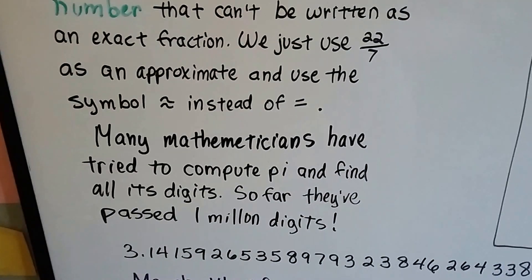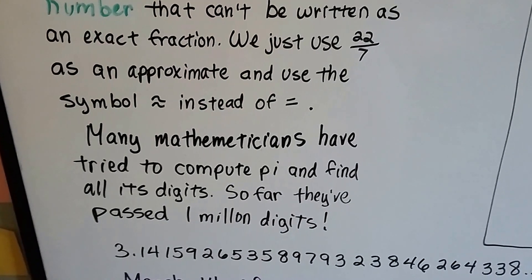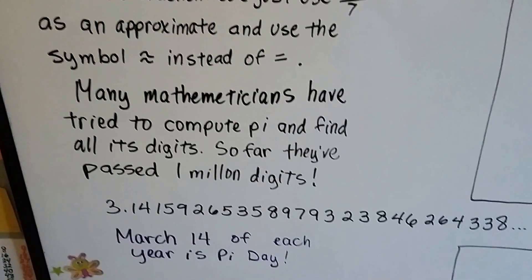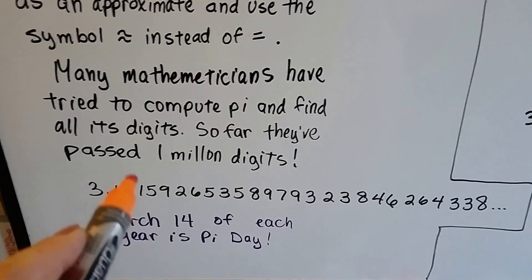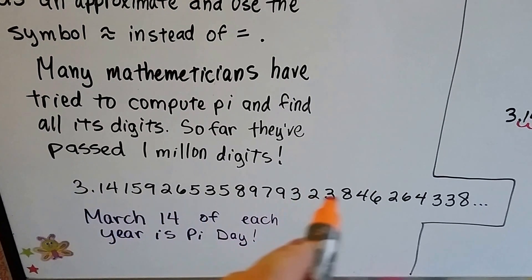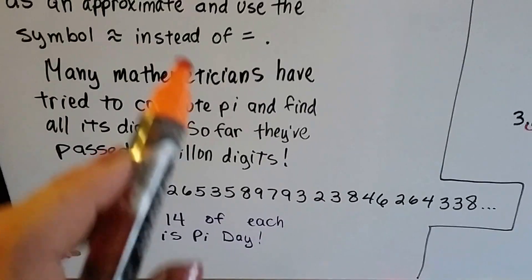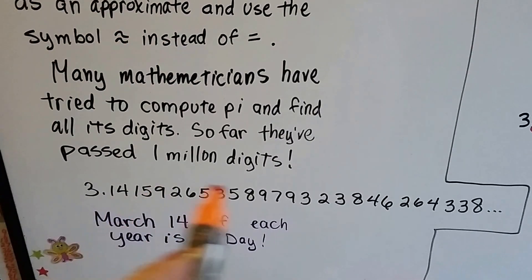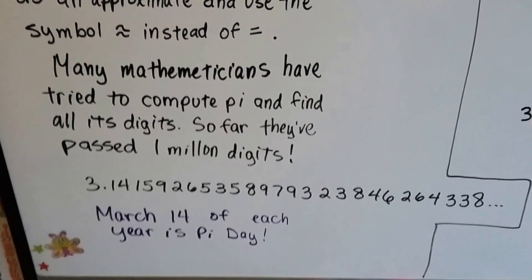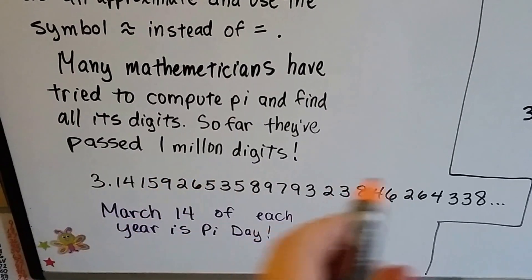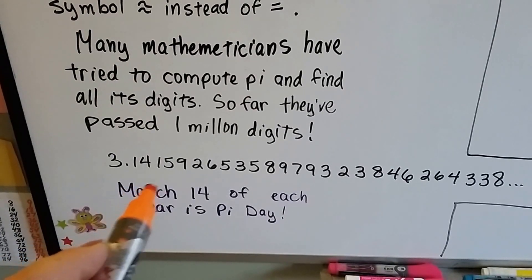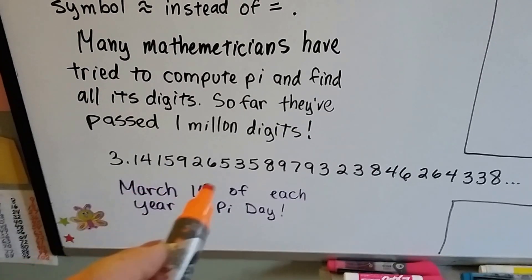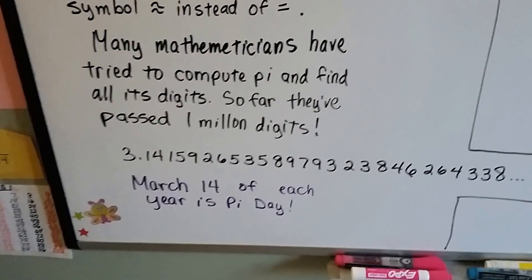Many mathematicians have tried to compute pi and all its digits, and so far they've passed 1 million digits. So we use 3.14, and because we're not using all these other digits, we have to use that approximate symbol. Nobody knows the exact amount of pi. The digits keep going on and on forever. And remember that March 14th is pi day every year.